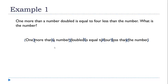Now I'll go through and start replacing the words with numbers and symbols. I'll start with 1, which is just the number 1, and 'more than,' which means add or plus. This brings me to 'a number' — anytime you see a phrase like this that represents what you're trying to find, that's where you put the variable. For this equation I'll use the letter x. Next we have 'doubled,' which means 2 times.